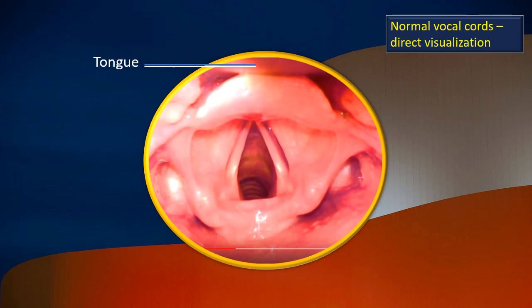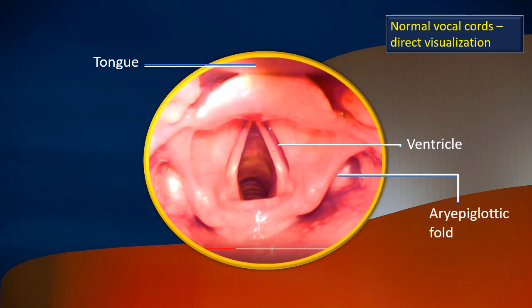The gap between the vestibular and the vocal fold is the ventricle. The ventricle leads into a saccule, which moves up into the side of the larynx. That is the aryepiglottic fold, and that is the pyriform fossa on the outer side of the aryepiglottic fold.